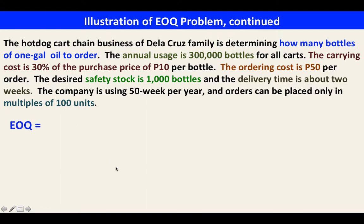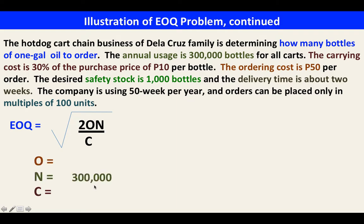To analyze the problem, we need to know the formula for EOQ so we can determine if the problem provides all the required information. The formula is: EOQ = √(2 × ordering cost × number of units / carrying cost).